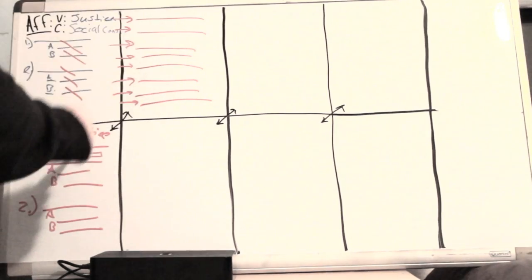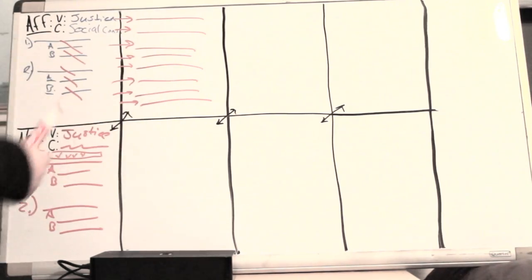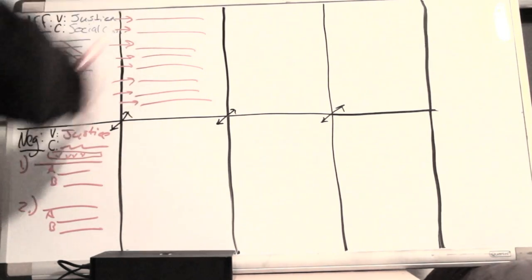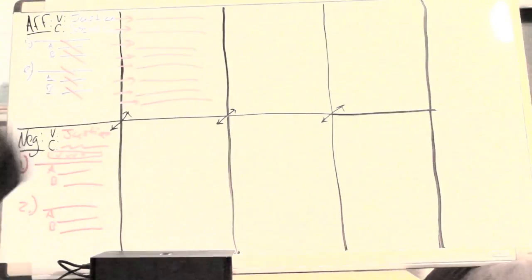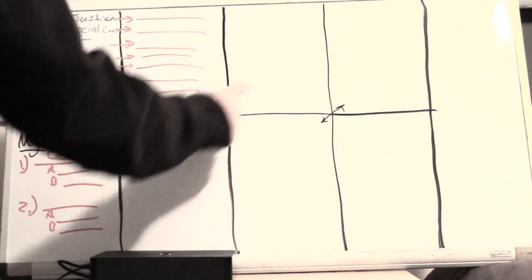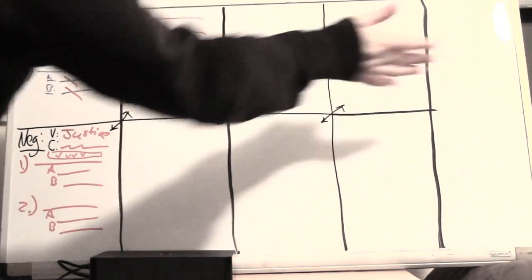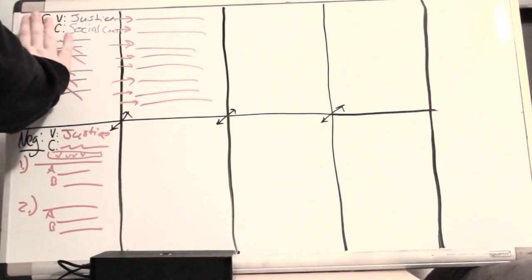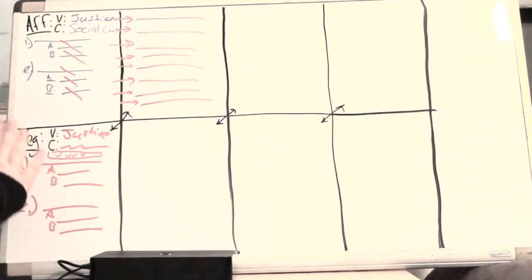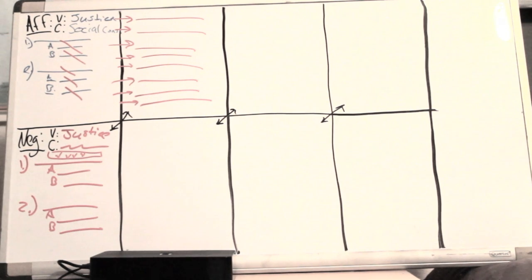These two boxes are one speech — you would be flowing them as if they're one speech. The reason arguments are split into two boxes is because it's supposed to literally flow: the arguments brought up on the affirmative side flow one direction, the arguments on the negative side flow the other direction, and you ultimately result in winning.